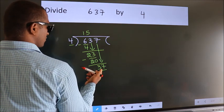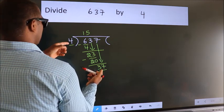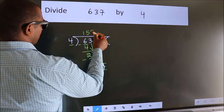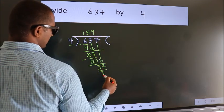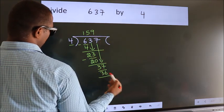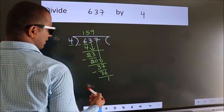A number close to 37 in the 4 table is 4 nines 36. Now we subtract. We get 1.